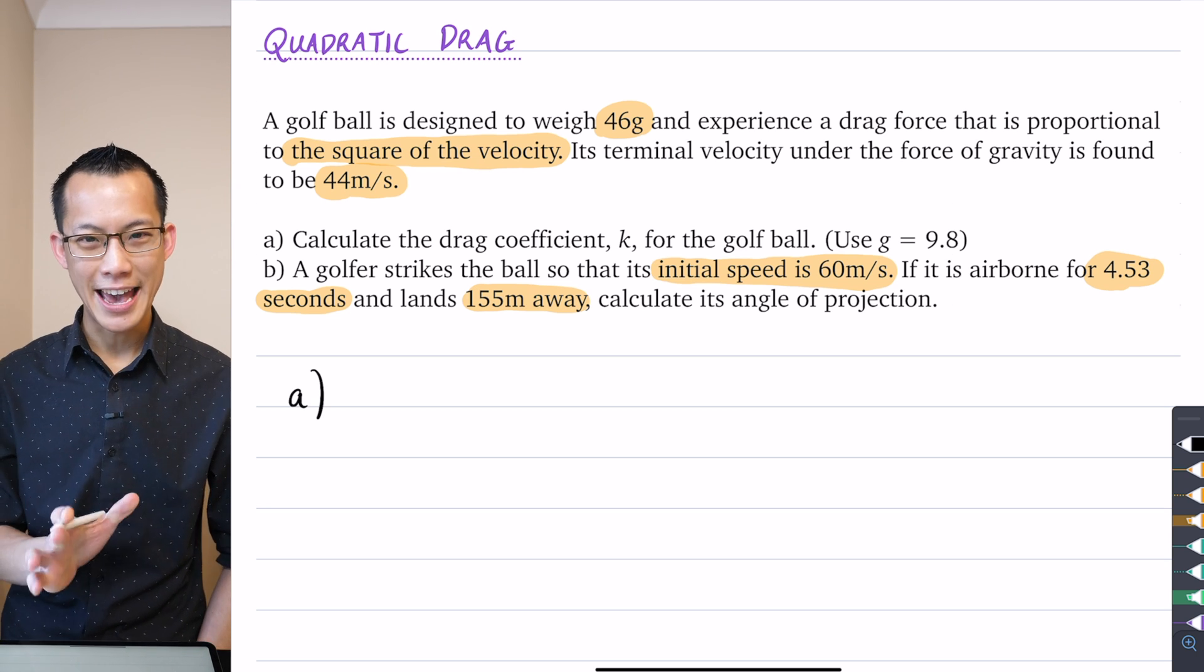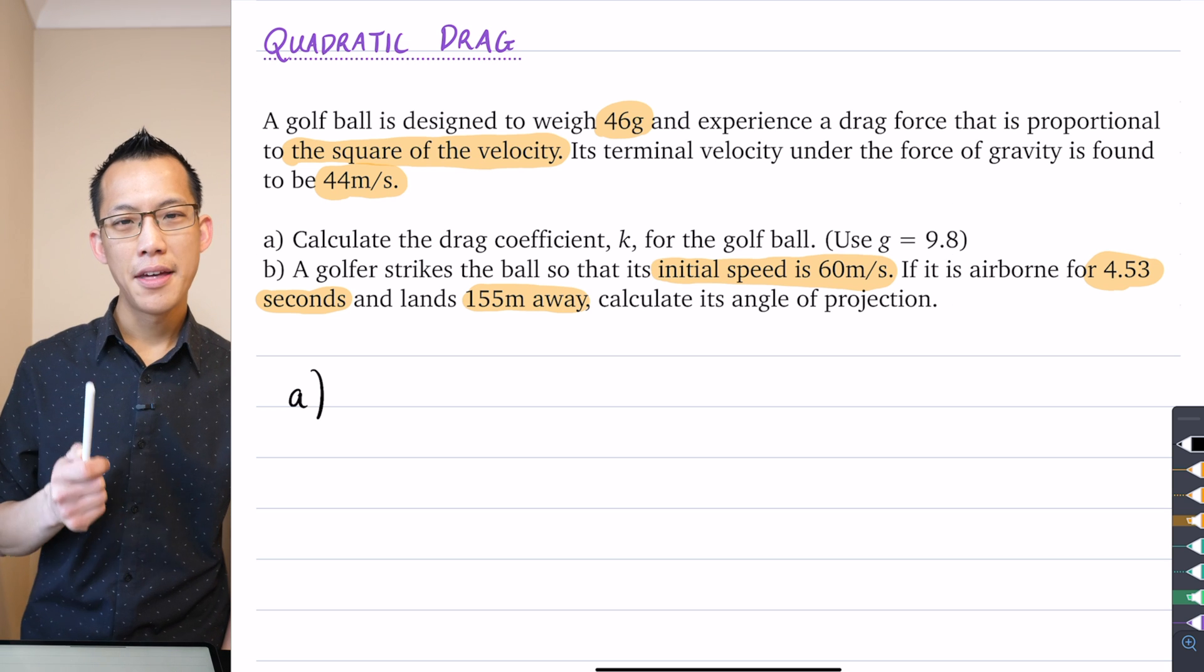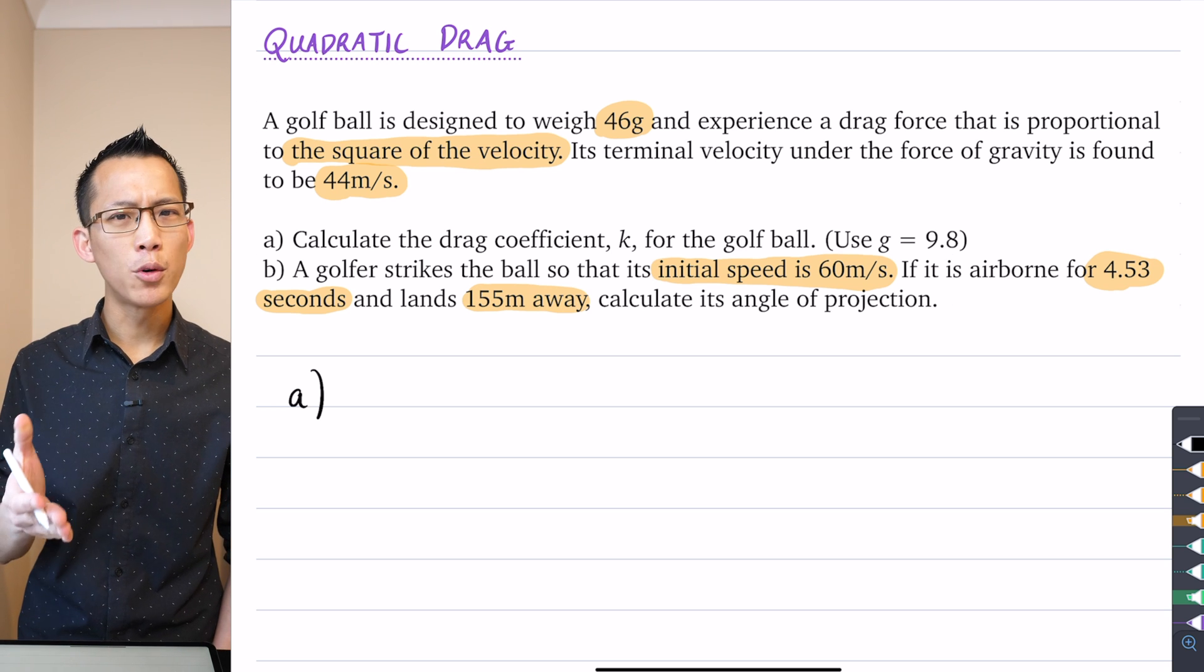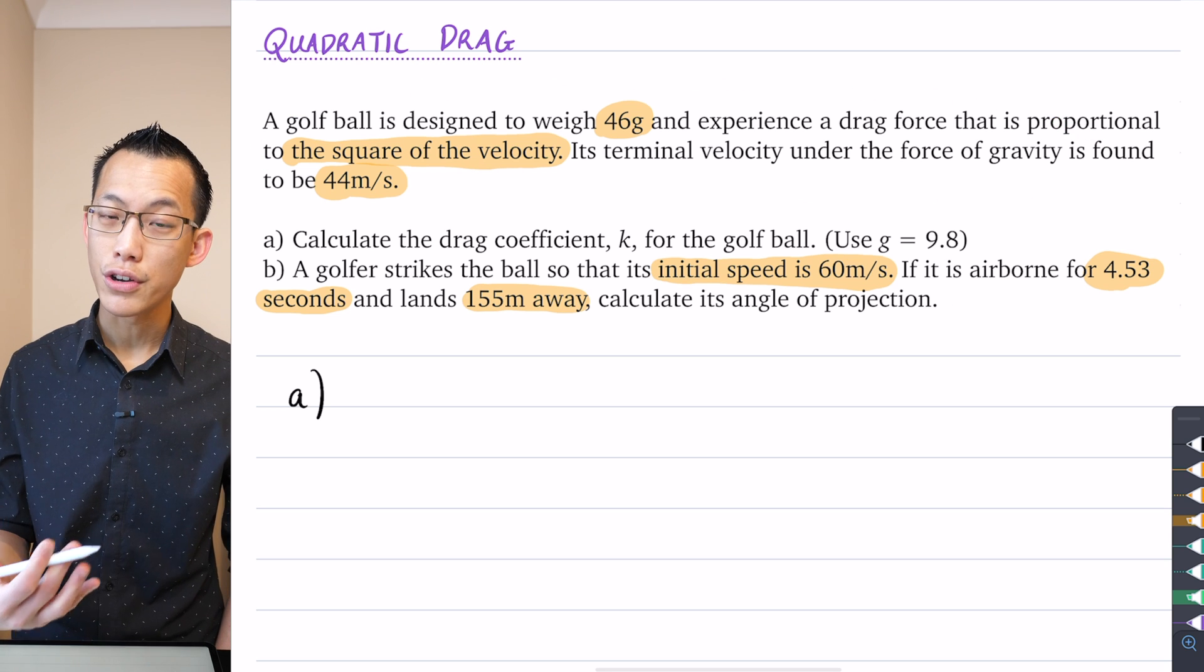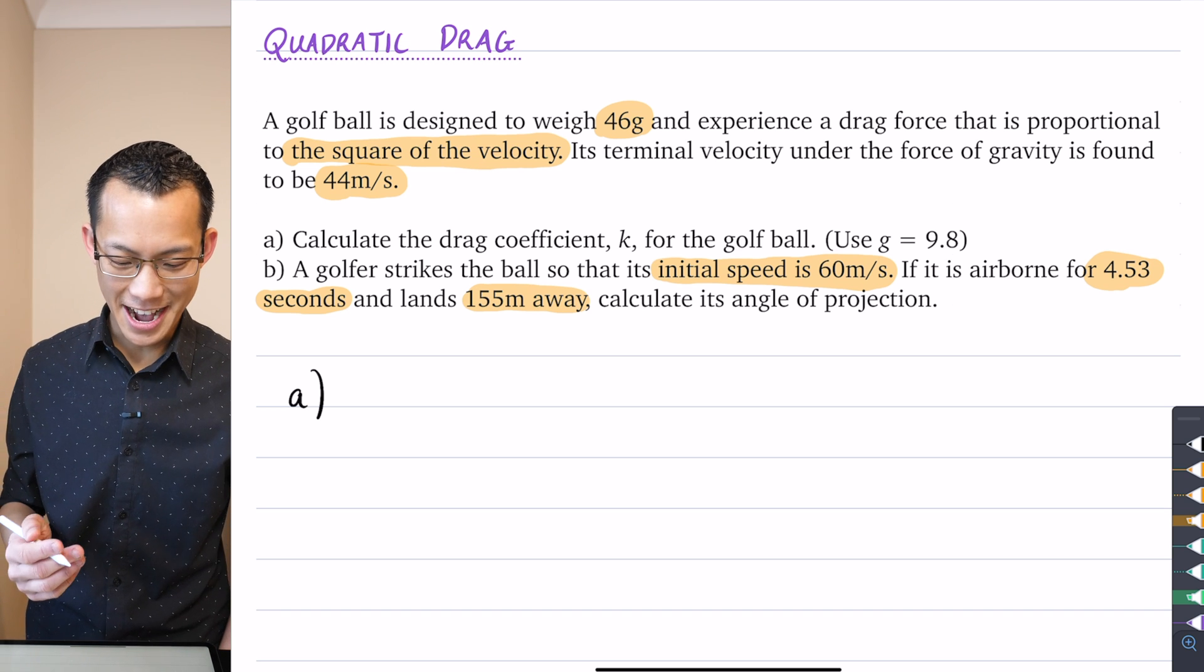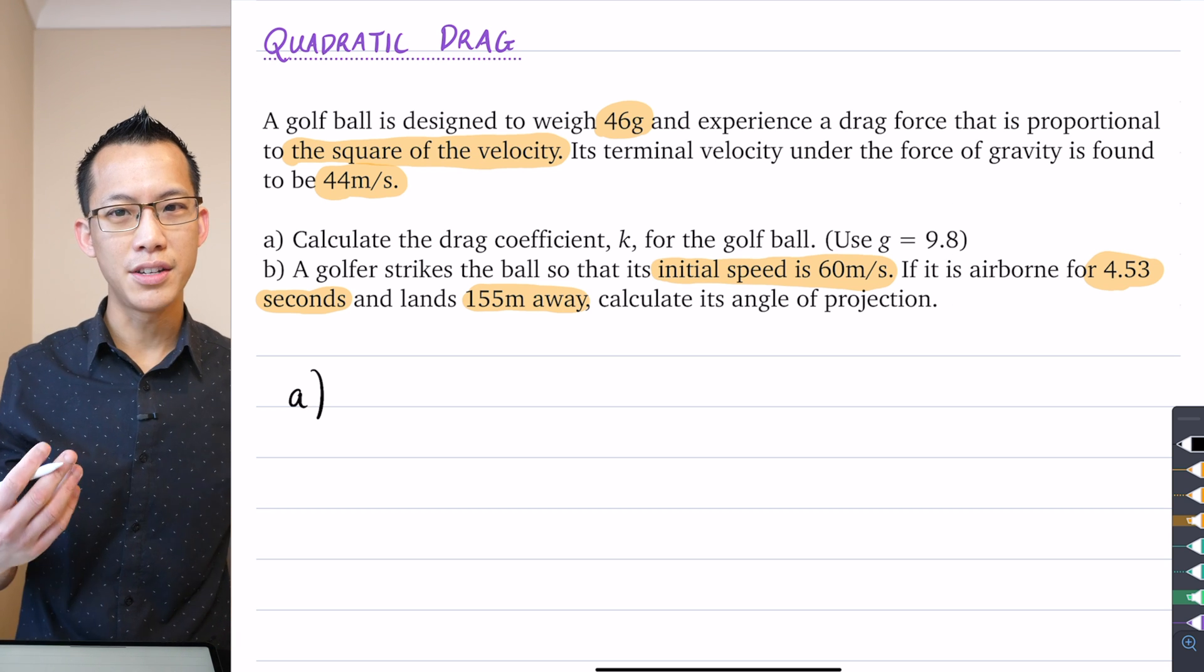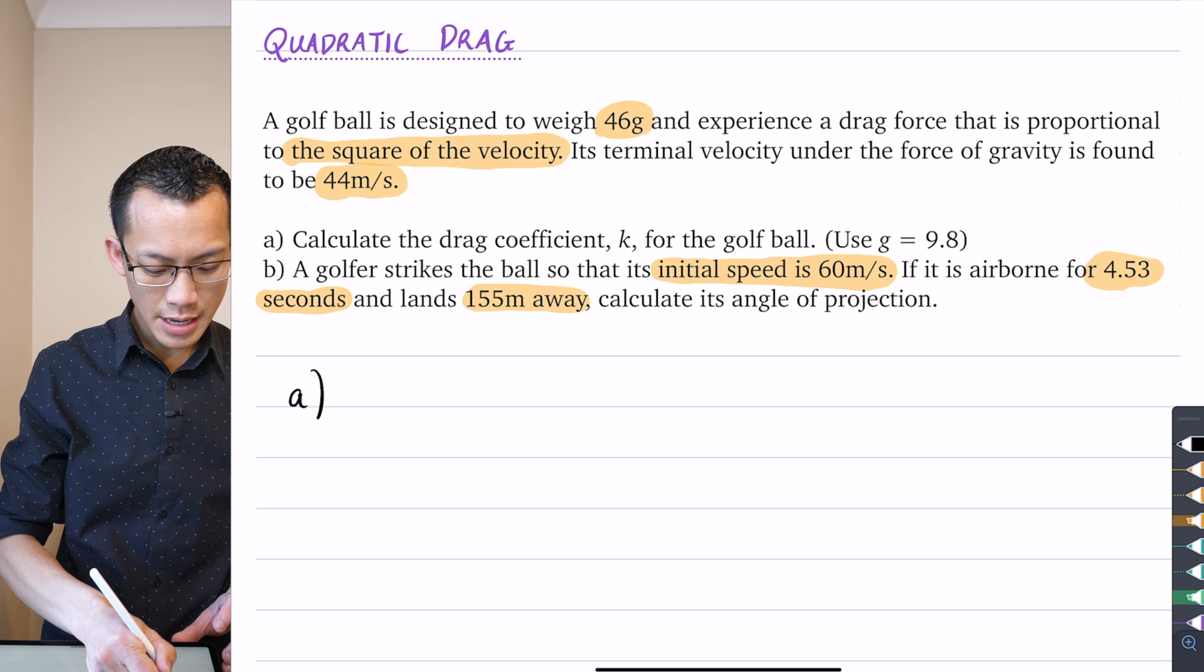Part A: we're trying to calculate the drag coefficient k for the golf ball. They give us this helpful clue we'll need to use gravity. Have a think about this - how do we work out terminal velocity? Terminal velocity is really to do with just vertical motion. It occurs on a downward journey, not an upward journey. The velocity you terminate upwardly is zero because gravity stops you. We're talking about the downward journey.